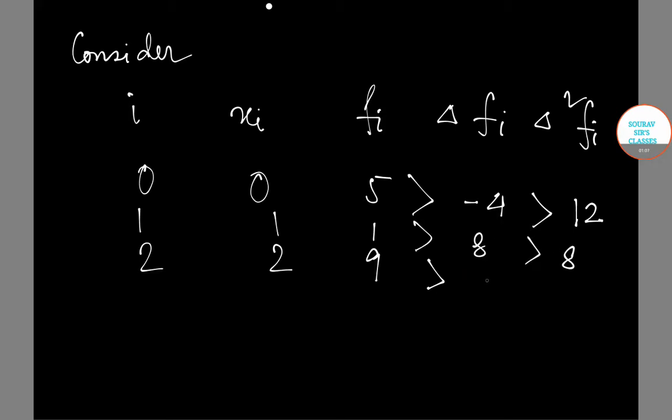Then 16, 14. For i equals 3, x equals 3, f equals 25, delta f equals 30. And then i equals 4, x equals 4, f equals 55.